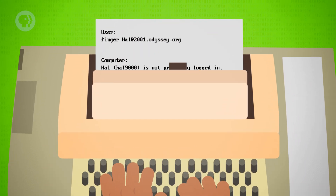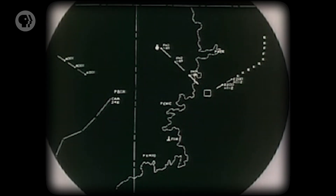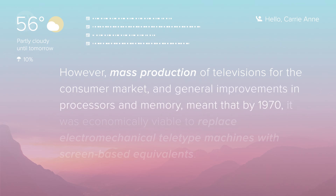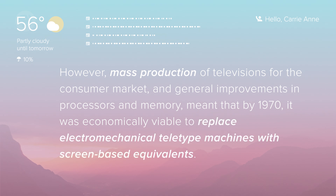Electromechanical teletype machines were the primary computing interface for most users up until around the 1970s. Although computer screens first emerged in the 1950s and were used for graphics, they were too expensive and low resolution for everyday use. However, mass production of televisions for the consumer market, and general improvements in processors and memory, meant that by 1970 it was economically viable to replace electromechanical teletype machines with screen-based equivalents. But rather than build a whole new standard to interface computers with these screens, engineers simply recycled the existing text-only teletype protocol. These machines used a screen which simulated endless paper — it was text in and text out, nothing more. The protocol was identical, so computers couldn't even tell if it was paper or a screen.